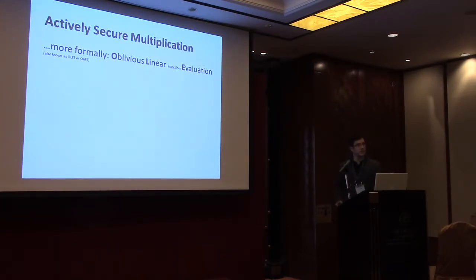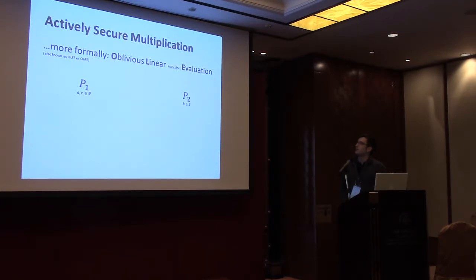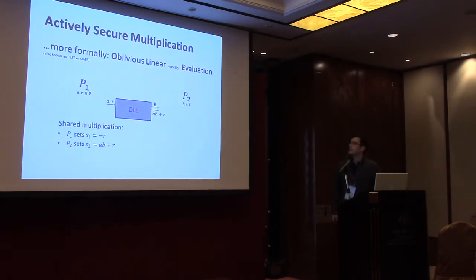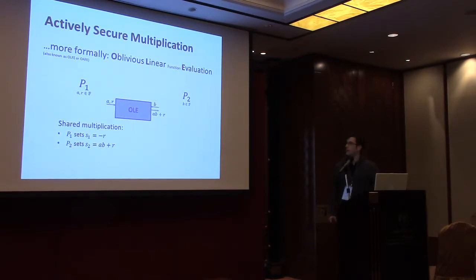Formally, you can abstract this as an oblivious linear function evaluation (OLE). Party one has input value a and some random value r, and party two has input value b. They want to compute the linear function a times b plus r. This OLE realizes that functionality, giving a shared multiplication: party one holds share b minus r, and party two holds share a times b plus r. Adding the two shares yields the product a times b.